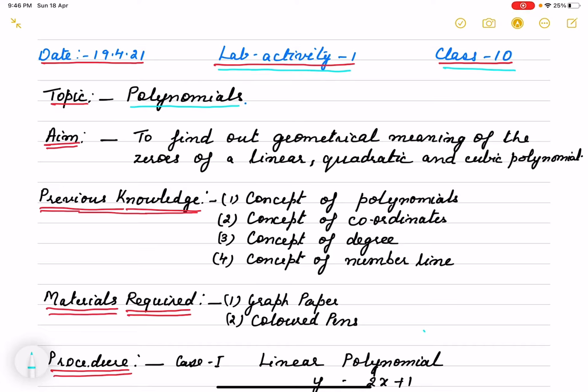So we first write what is the topic, that is polynomials. What is our aim? To find out geometrical meaning of the zeros of linear, quadratic and cubic polynomials. We are going to find out zeros by graphical method and verify.